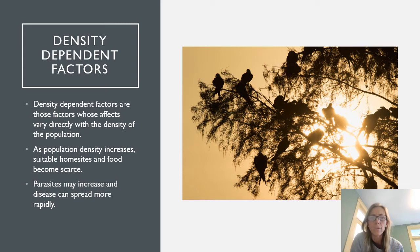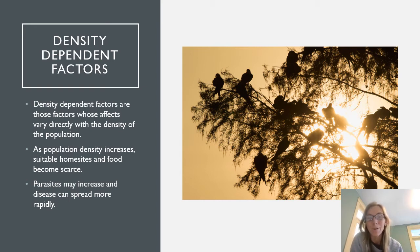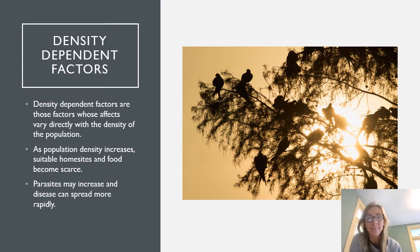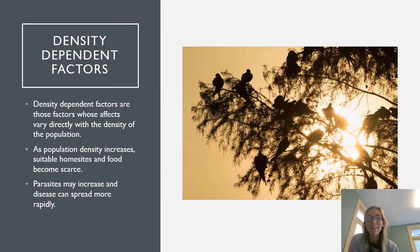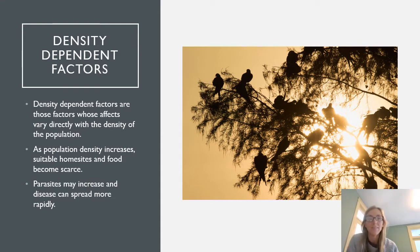Parasites may also increase and disease can spread more rapidly at high densities. In some areas, increasing wildlife populations create problems by spreading communicable diseases — we've seen this with rabies in populations of skunks, raccoons, and foxes. In some cases, people have intervened with birth control on wildlife populations to try to keep populations in check.